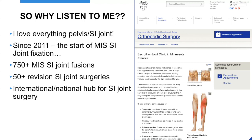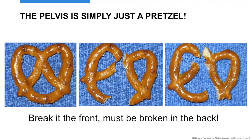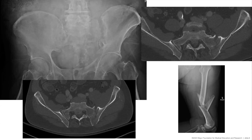The pelvis is like a pretzel — whenever we see trauma in the front, whether it's rami fractures or symphysis injuries, there is always something in the back, and oftentimes it goes through the SI joint. This may bring back memories of open book pelvic fractures from residency — they go right through the sacrum or right to the SI joint. That's where trauma surgeons get to access the SI joint and fix that trauma.